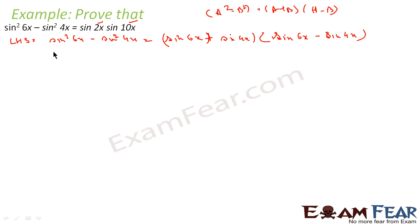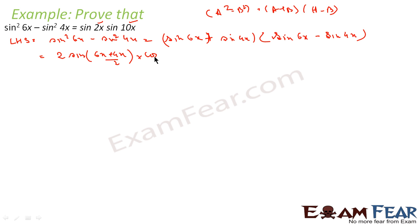Now we can use the formula sin A plus sin B is equal to 2 sin of (A plus B)/2 into cos of (A minus B)/2. So sin 6x plus sin 4x becomes 2 sin of (6x plus 4x)/2 into cos of (6x minus 4x)/2.